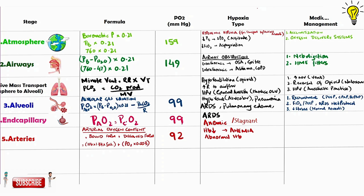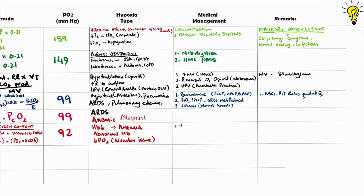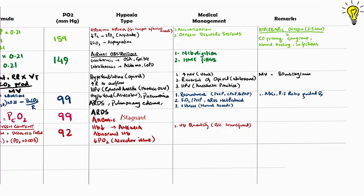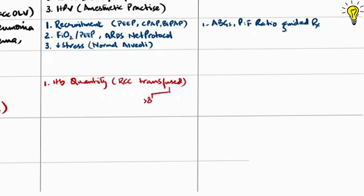Judging from arterial oxygen content equation, any reduction in hemoglobin or abnormal hemoglobin or fall in pressure of oxygen from alveoli to arteries would cause hypoxia. If hemoglobin quantity is reduced, we need to transfuse packed RBCs. Conservative approach says in normal patient hemoglobin below 8 and in cardiac case below 10 grams per deciliter warrants RBC transfusion for better oxygen delivery.